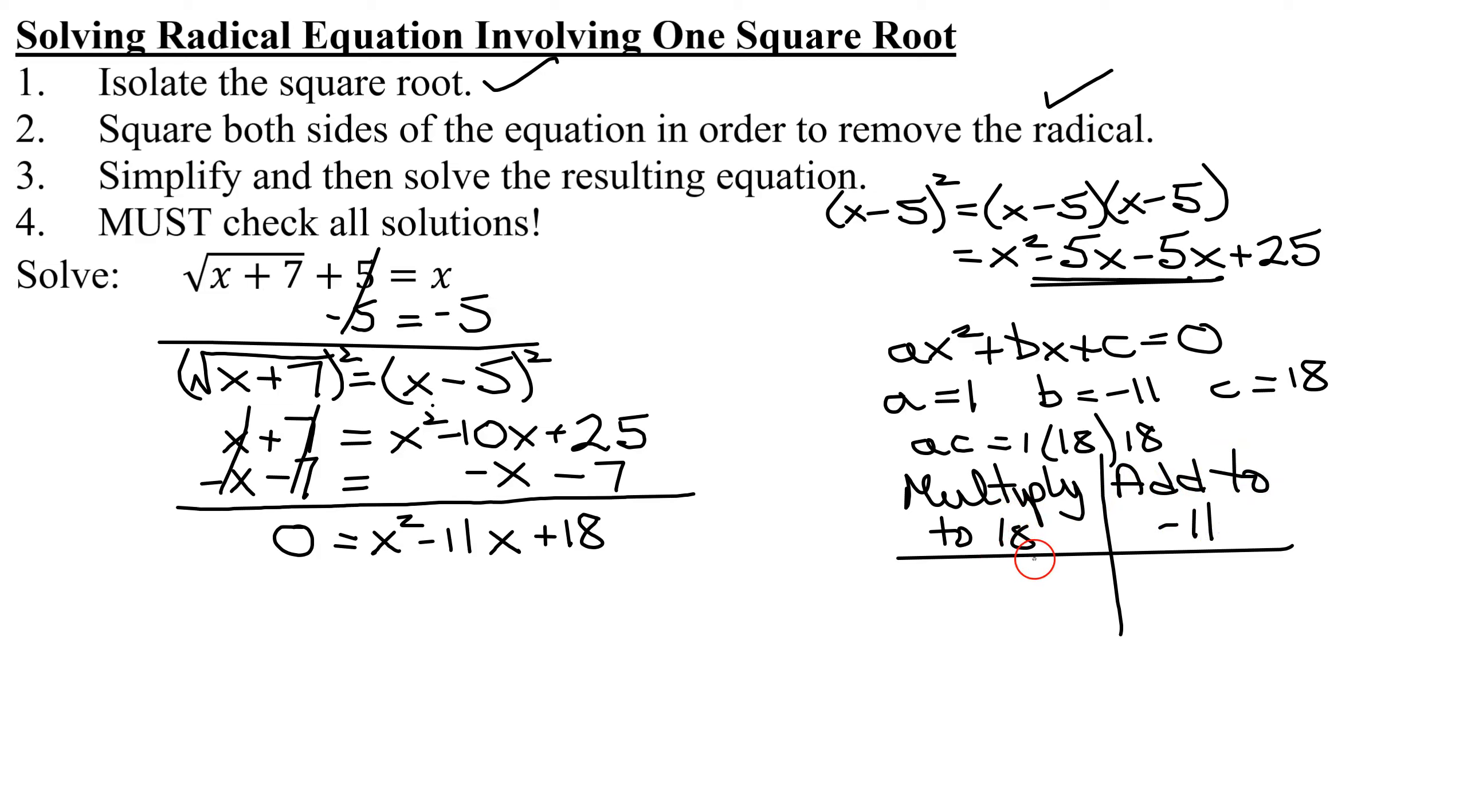Since they multiply to a positive, that says the signs are the same. And if they add to a negative, that same sign has to be negative. So I'm going to start with negative 1 and negative 18. They multiply to positive 18. But negative 1 plus negative 18 add to negative 19, which is not what I'm looking for.